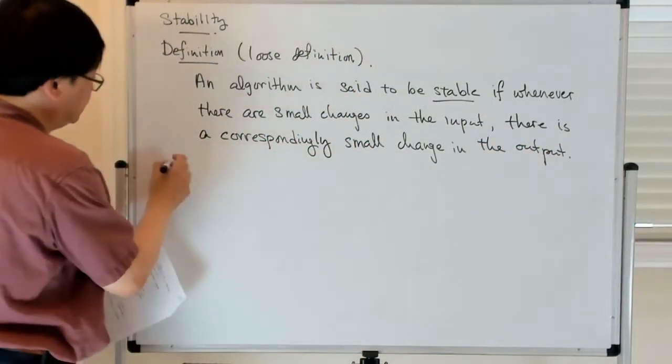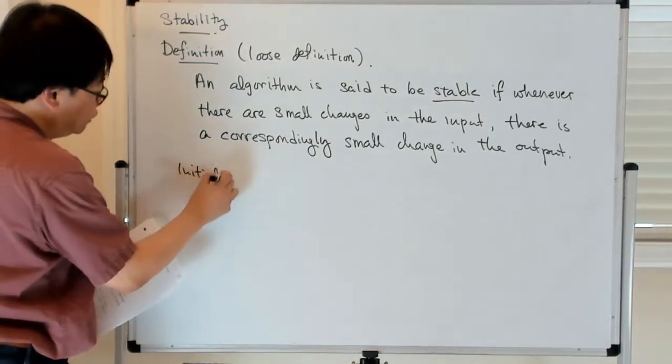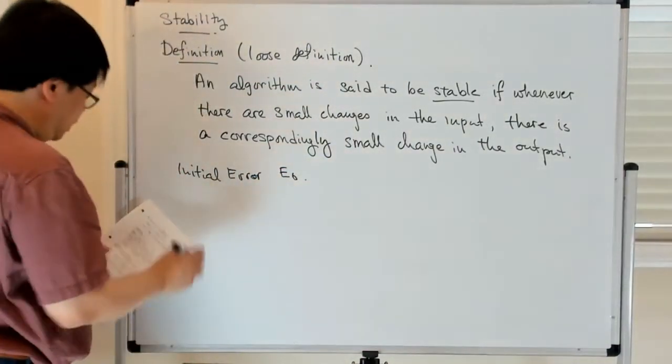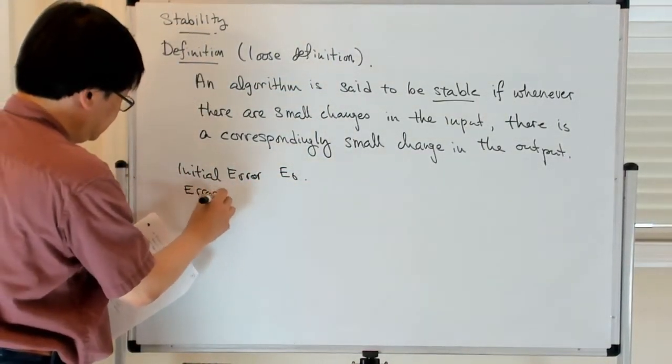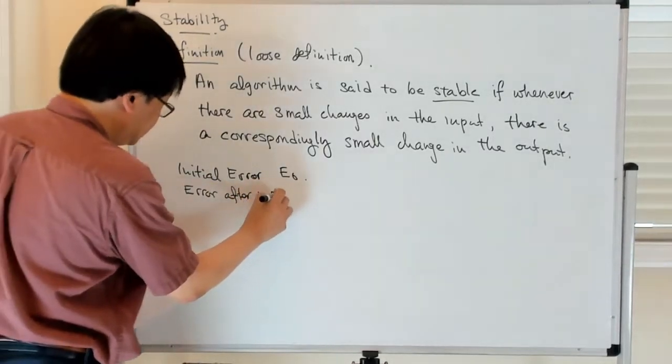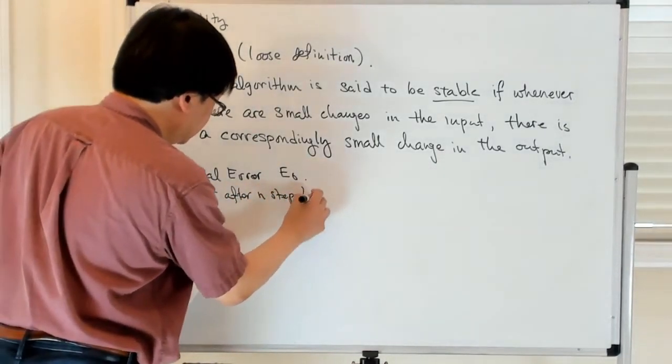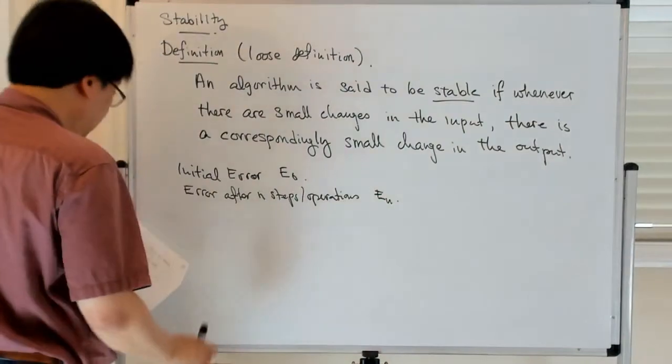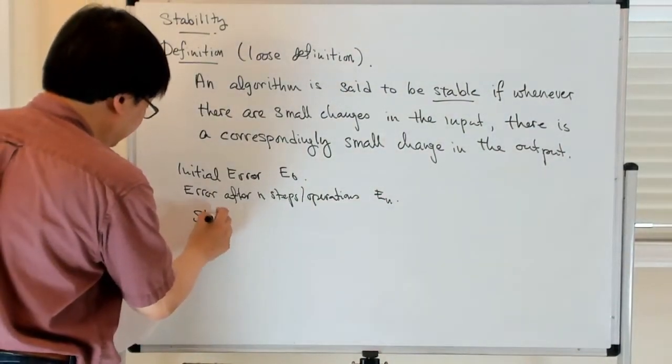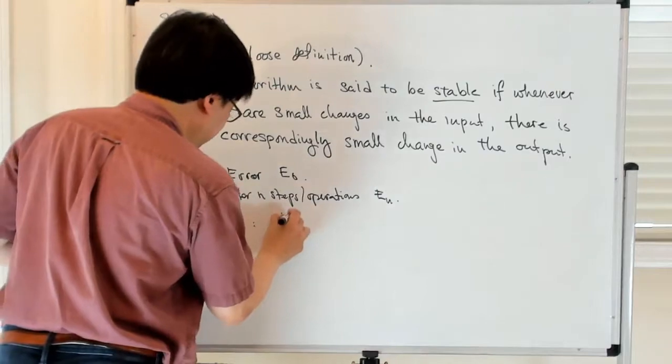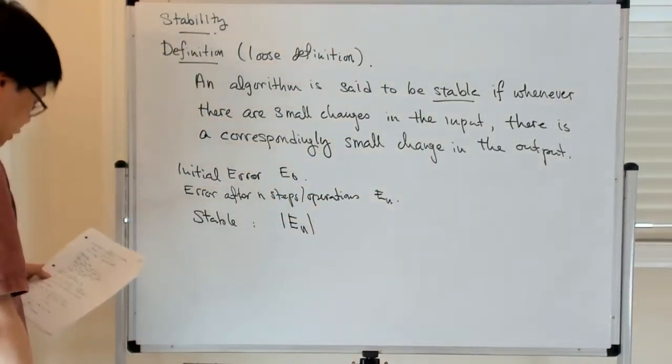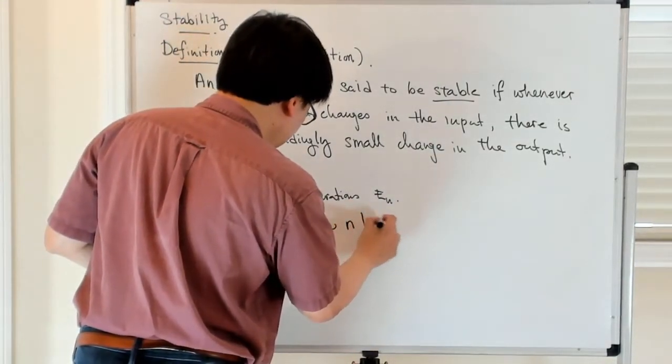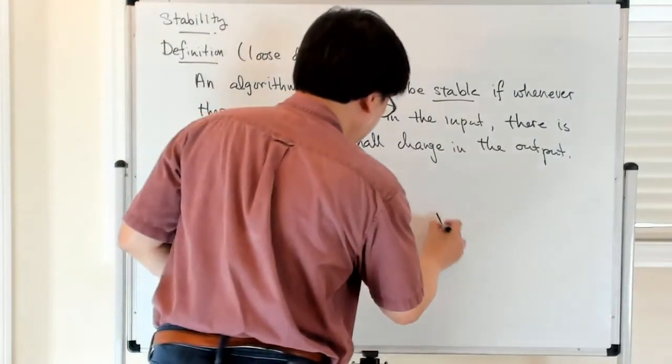So examples of this might be that if you have some sort of initial error, which I denote by E0, and the error after n steps or operations is denoted by En, then a method might be said to be stable if the absolute error En looks something like n times E0, so that's sort of a linear growth.